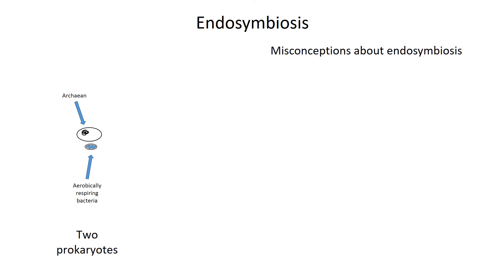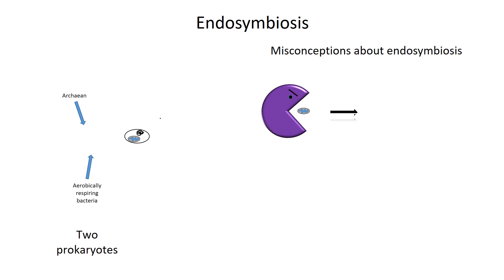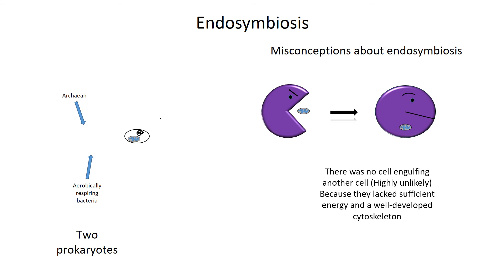Perhaps one of the biggest questions regarding endosymbiosis is: how did the two prokaryotes merge together? I provided one hypothesis — that the aerobically respiring bacteria was a parasite and bored its way into the archaean. Wherever I look on the web, though, I almost always see some larger cell engulfing a smaller cell, and then somehow that smaller cell didn't get digested and remained inside the larger cell. However, that's probably fairly unlikely for two reasons. To do phagocytosis — one cell eating another cell — requires lots of energy and a complex cytoskeleton. Bacteria lack both. They don't have enough ATP production and they lack a well-developed cytoskeleton.